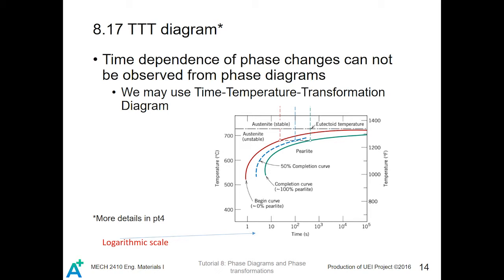Time-dependence of phase changes: there is a time-dependence of phase changes which cannot be observed from phase diagrams alone. Therefore, we introduce a new diagram called the time-temperature transformation diagram, or TTT diagram, which will be covered in more detail in Part 4. The x-axis of the TTT diagram is the time axis, plotted on a logarithmic scale.